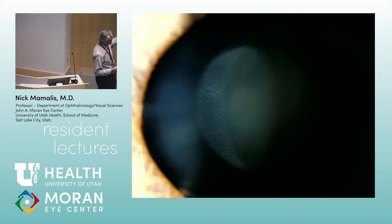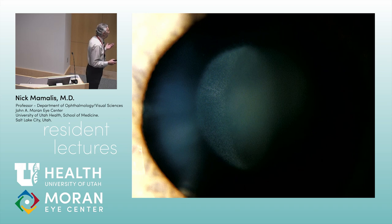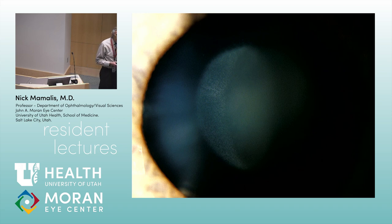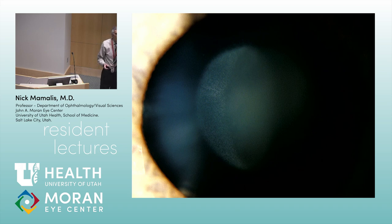Here's another view with the slit lamp. You can see the opacity in the center of the nucleus — the adult nucleus is still clear and the cortex is still clear. If these are bilateral and not too dense, these people can grow up and have pretty decent vision. If they're unilateral and dense, they get severe amblyopia — that's a real emergency, you've got to get it out right away. Bilateral and not bad, sometimes these people make it into adulthood with 20/100 vision.